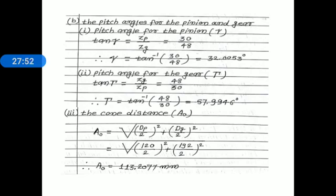Step C: cone distance. Cone distance A_O = √((D_p/2)² + (D_g/2)²) = √((120/2)² + (192/2)²) = √(60² + 96²). After simplification, the cone distance = 113.2077 mm.